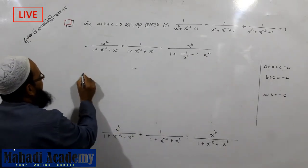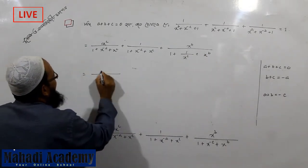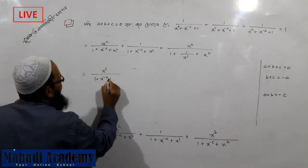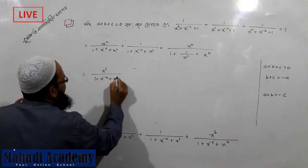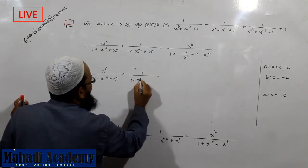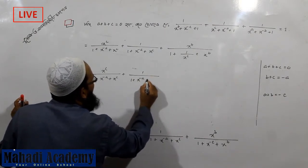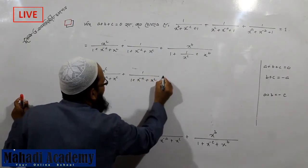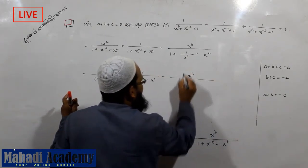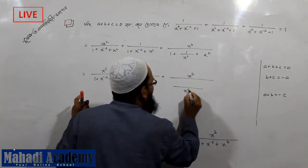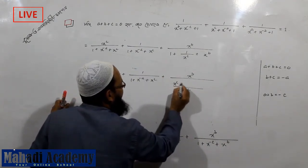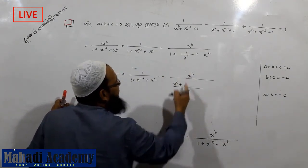This is where it goes. X to the power c, 1 plus x to the power minus a plus x to the power c, is at the same time 1 plus x to the power minus a plus x to the power c. Here we have to get x to the power b. We will get x to the power c, 1 is x to the power c, plus cancel.